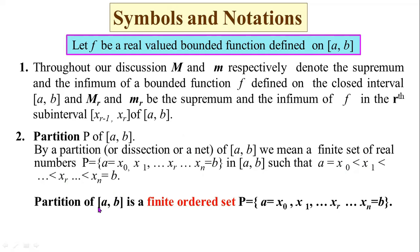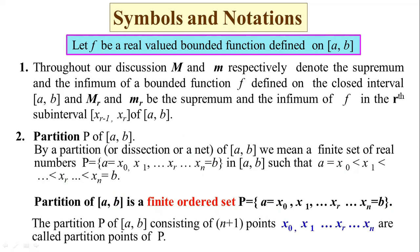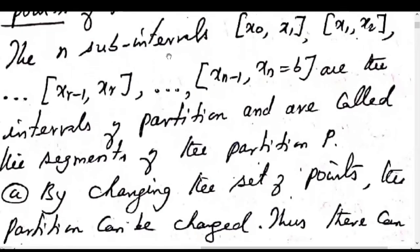A partition of the closed interval [a, b] is a finite ordered set P = {x_0, x_1, x_2, ..., x_r, ..., x_n} where x_0 = a and x_n = b. The partition consists of n+1 points x_0, x_1, x_2, ..., x_r, ..., x_n, which are called the partition points of [a, b].